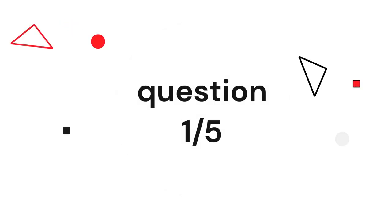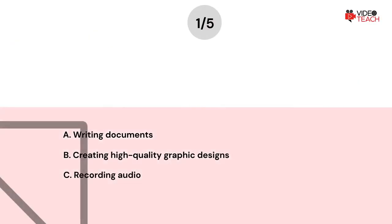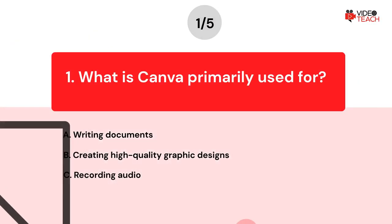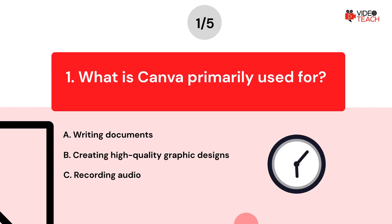Question number one. What is Canva primarily used for? Option A: Writing documents. Option B: Creating high-quality graphic designs. Option C: Recording audio. Now you have about 15 seconds to think about your answer.